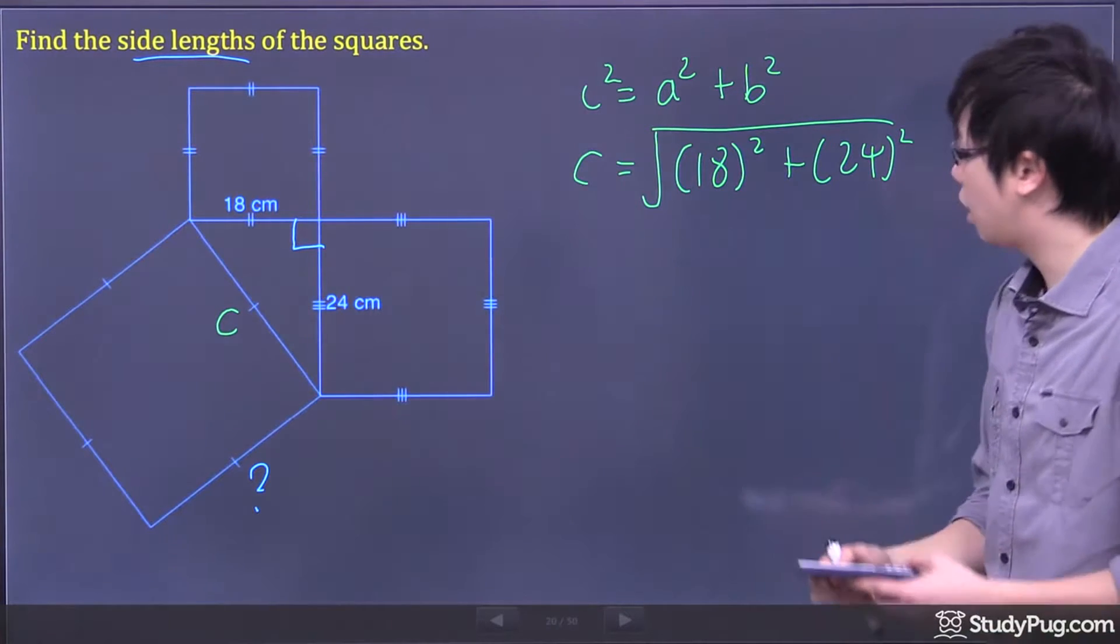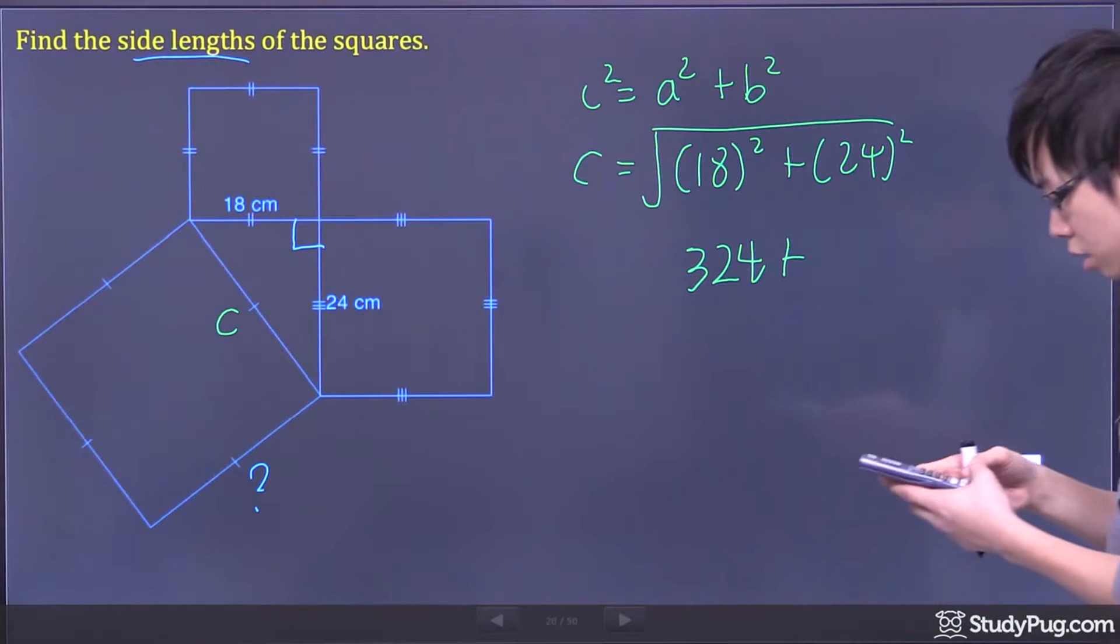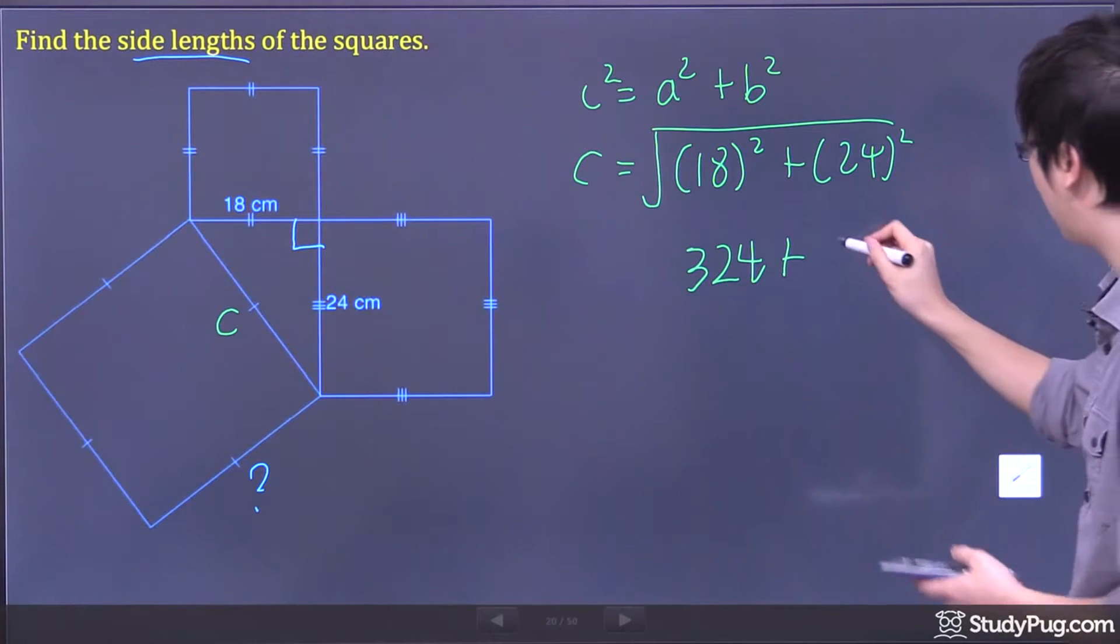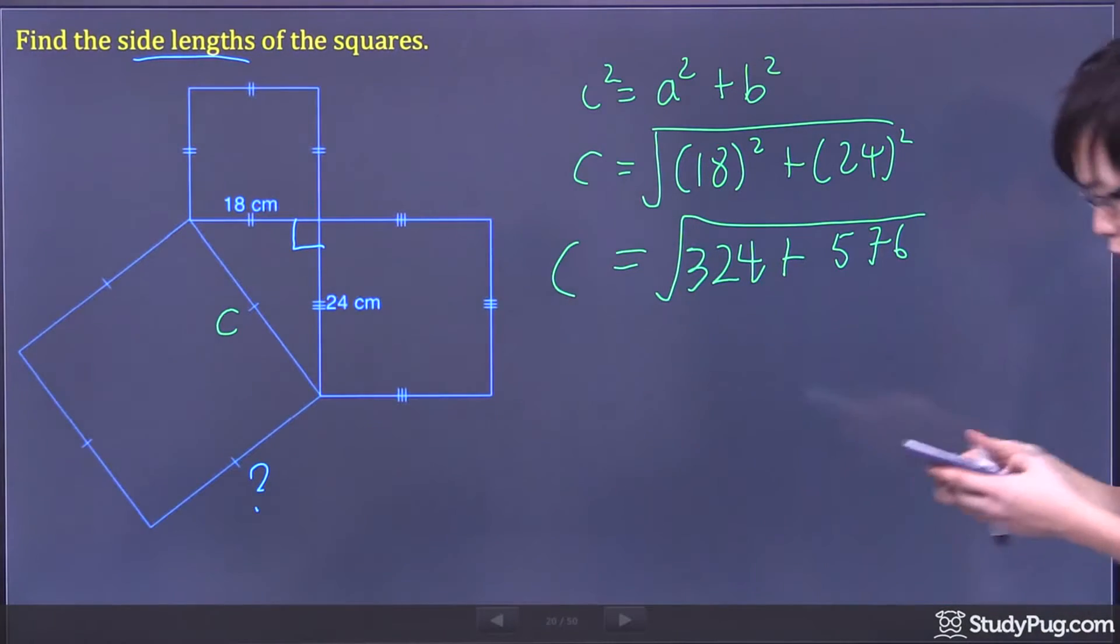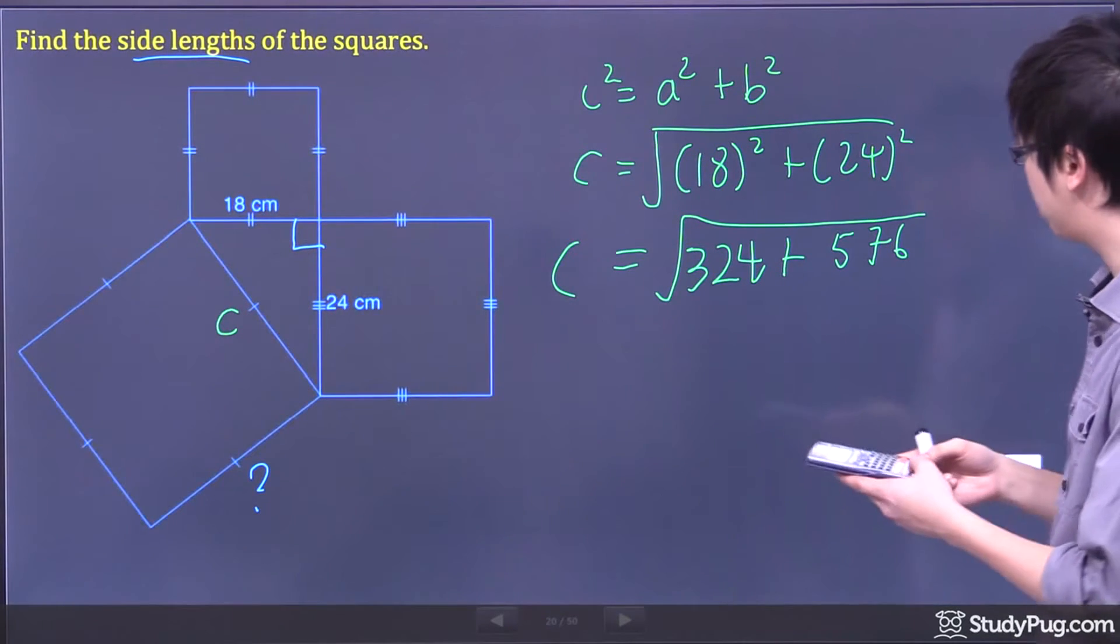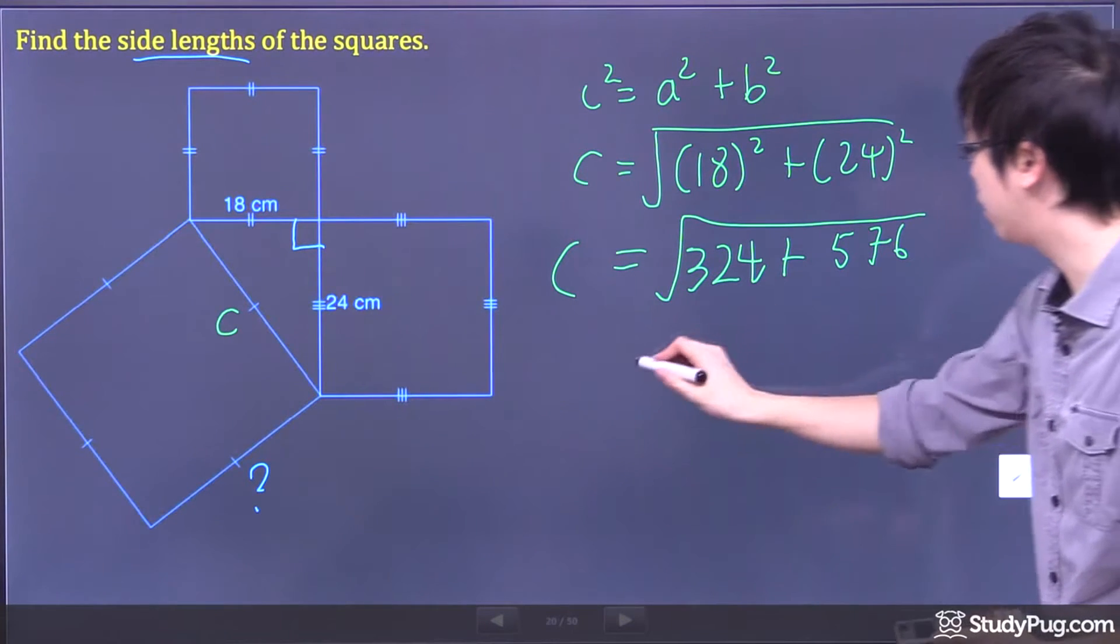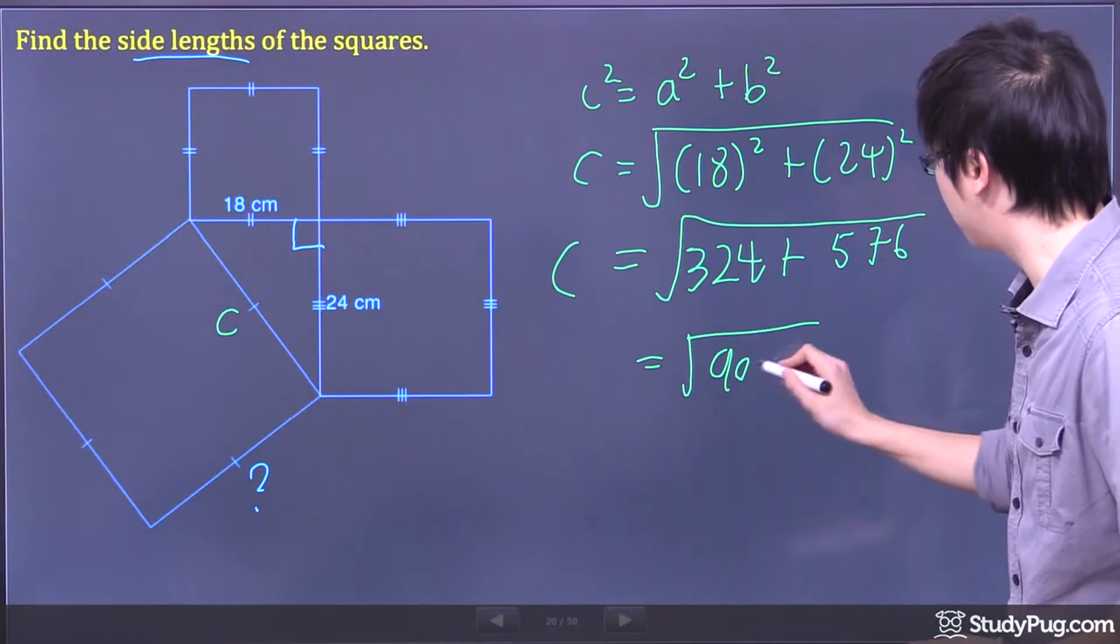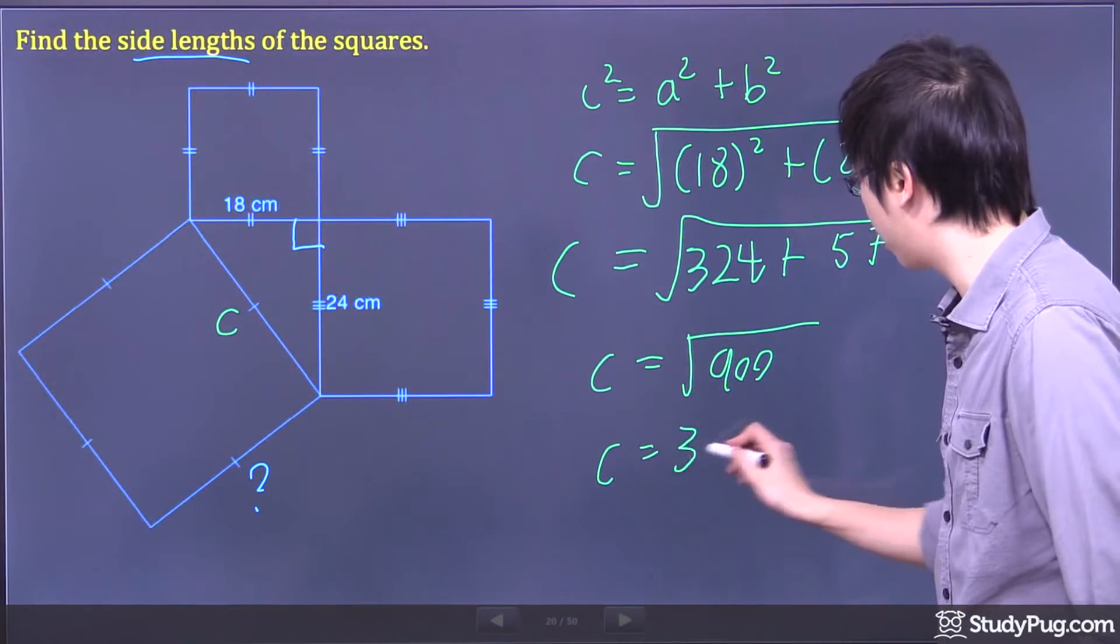So what happens at the end, you go 18 squared, we get 324 for this number. And 24 squared for 576. And you square root the whole thing. So make sure you add them before you square root it all. So 324 plus 576, I got 900. So to show you all the work, square root of that, we get 30.